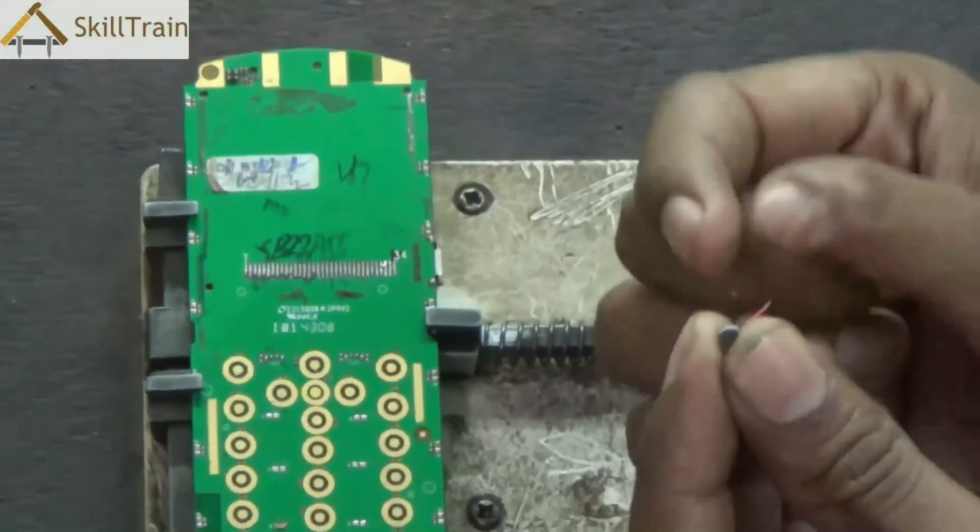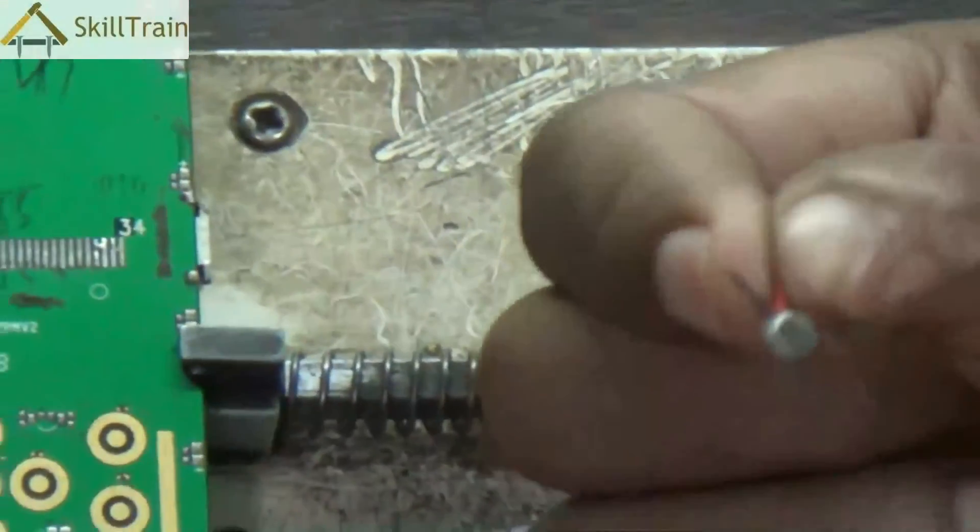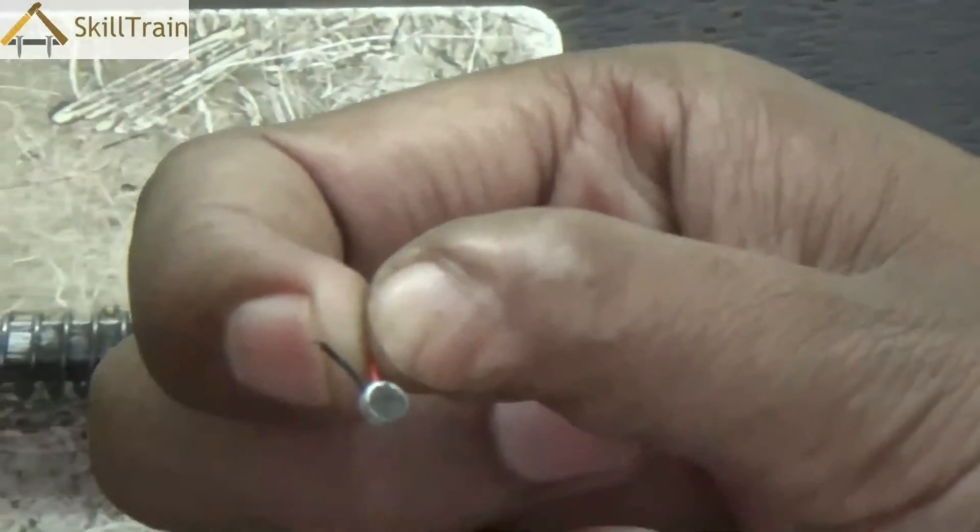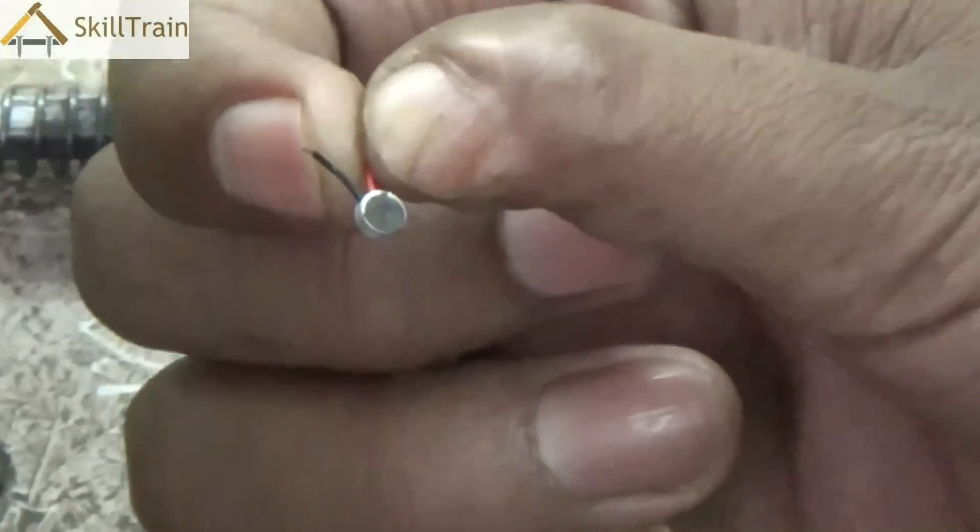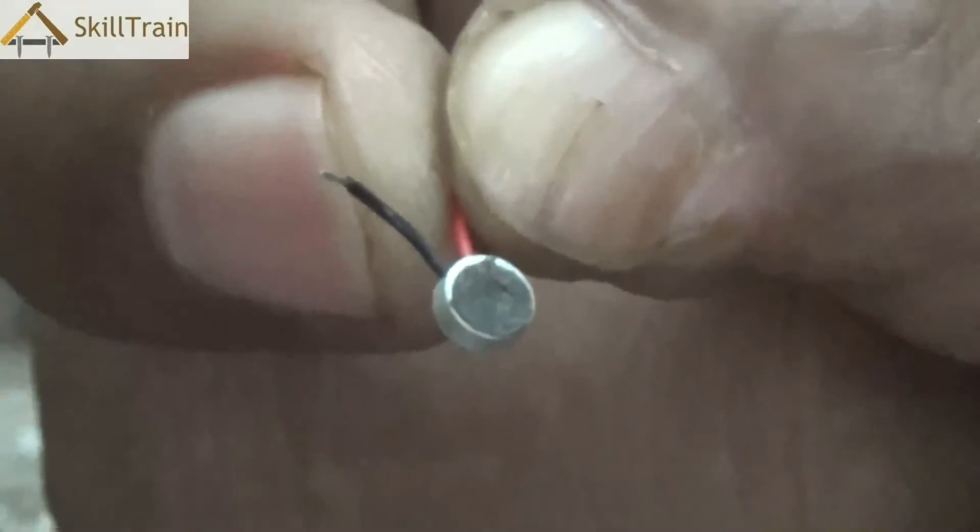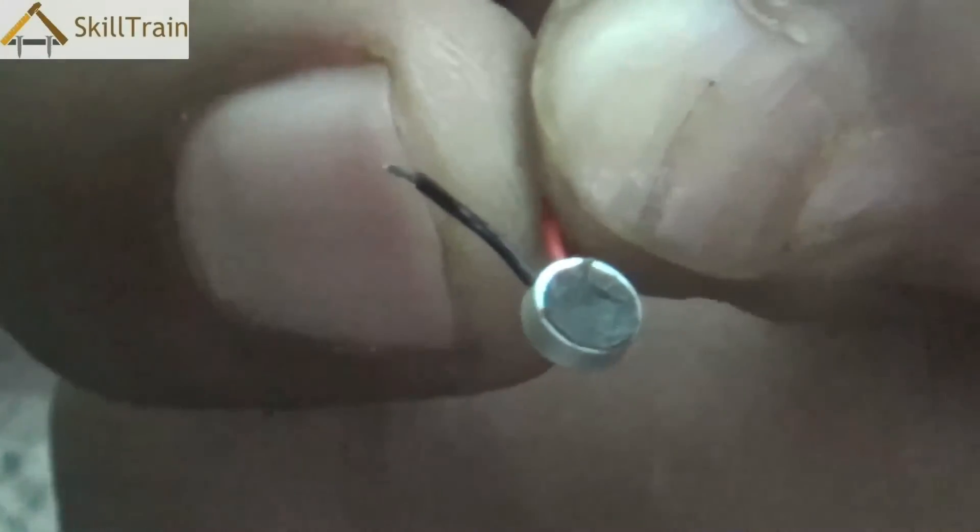This is how a mic looks like. It's a very minute component which is placed mostly at the bottom part of your mobile phone. We saw in earlier videos the microphone tip and slot. It's placed at the bottom part of the mobile phone.